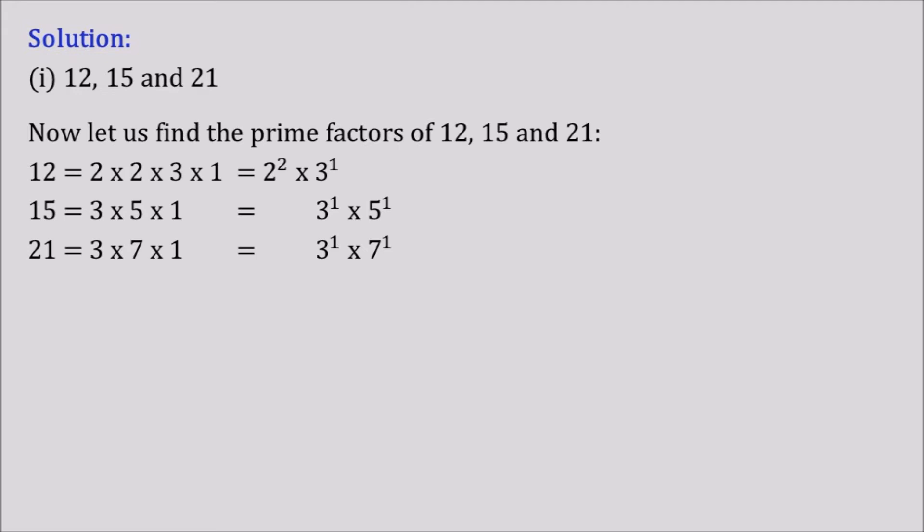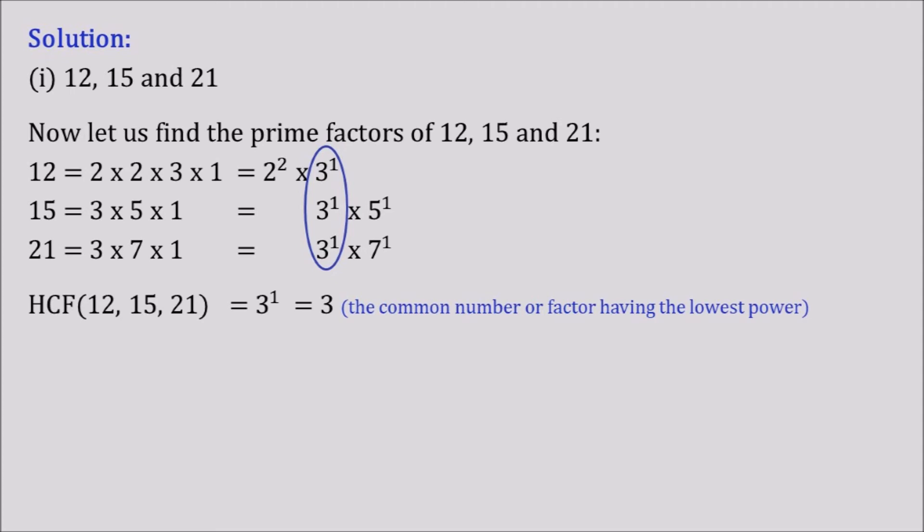Looking at the factors we got, 3 is the common factor for all three numbers and the power of 3 is 1. Now let's find the HCF. The HCF of 12, 15, and 21 is equal to 3 to the power 1, which equals 3. The definition of HCF says the common factor having the lowest power. Here the common number is 3 and the lowest power is 1, so the HCF of 12, 15, 21 is equal to 3.